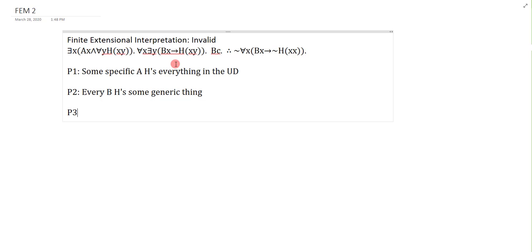Now, premise 3 doesn't really need a translation, but I'm just going to do it anyway. On a test, if you're trying to save time, you wouldn't bother. But this just says C is a B. BC means C is a B.